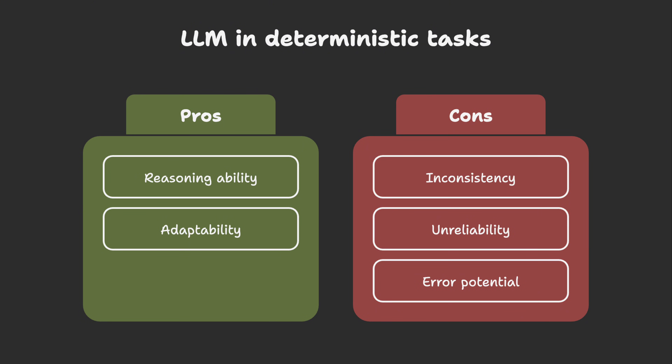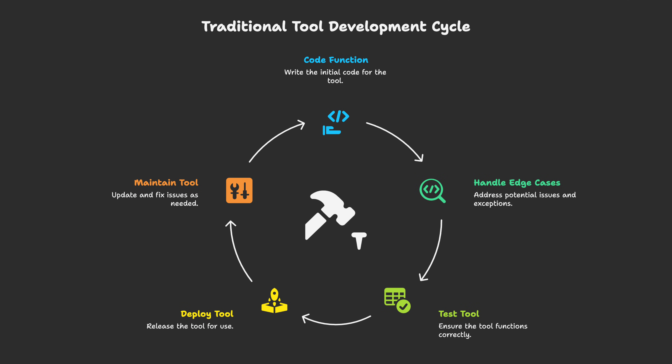We're diving into a practical pattern for building reliable tools that AI agents can use. The core problem is this: agents are great at reasoning but terrible at consistency. You need deterministic behavior — like calculating drug dosages, evaluating loan applications, or routing support tickets — and you can't rely on an LLM to apply the same logic every time. The traditional solution is to code these tools manually: write the function, handle edge cases, test it, deploy it, maintain it. This takes time, requires developers, and creates a bottleneck between domain knowledge and execution.